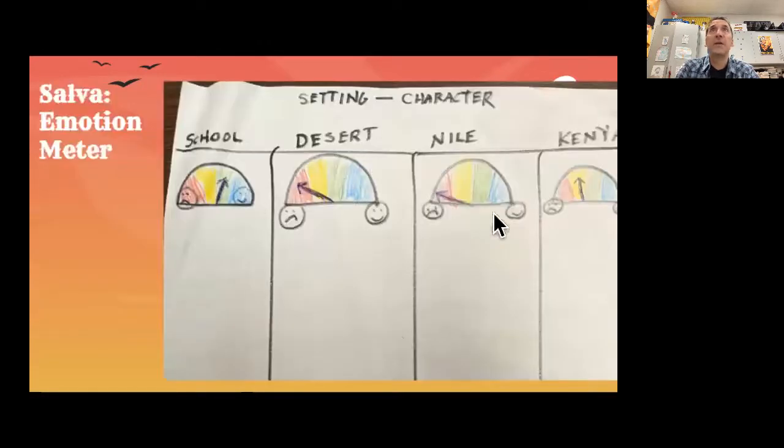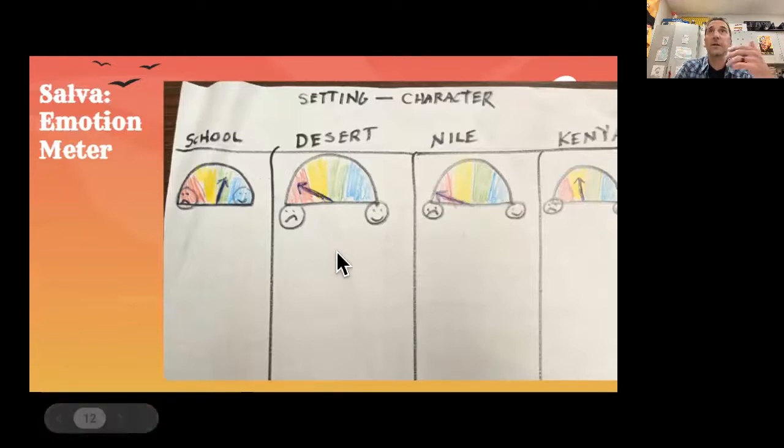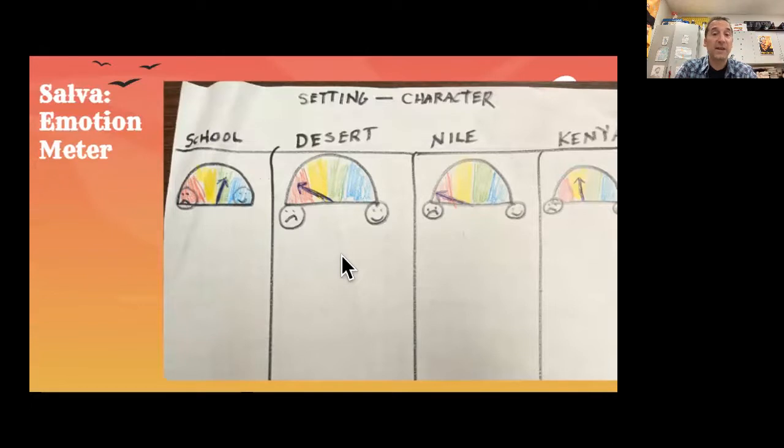Also, I don't know that I'm ever going to use this, but it was just an idea that I had. I said, Salva's happiness seems to go up and down. So, I made a little meter like a gas gauge to show Salva's emotions, whether positive or negative. And at the beginning of the story, when he was in school, I indicated that he was fairly happy. But when he went to the desert and into the Nile and so on, things got much worse. This was just me recording my thinking visually.